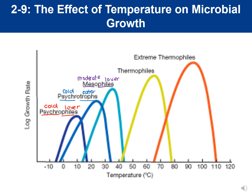Next we have thermophiles — 'thermo' meaning heat — so thermophiles are heat lovers. They grow at a minimum of about 42°C, up to almost 80°C, with an optimal growth temperature around 60°C.